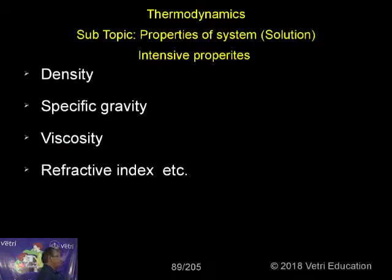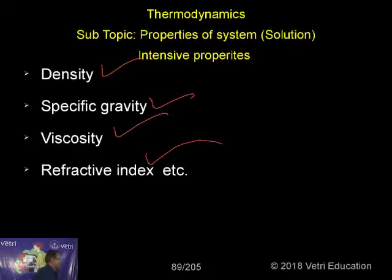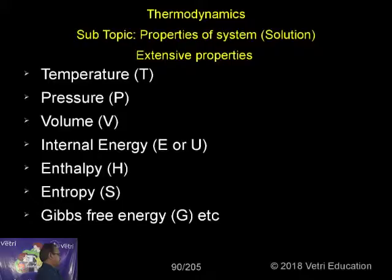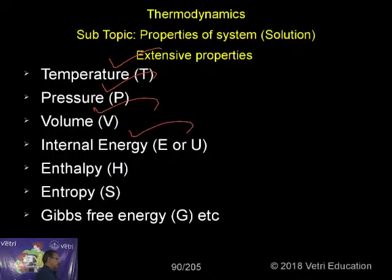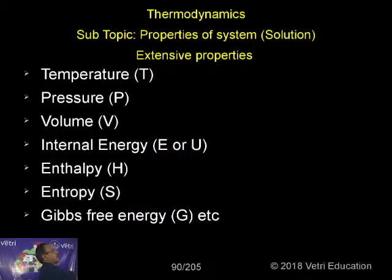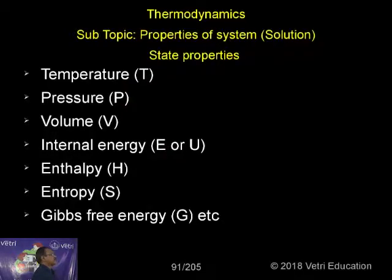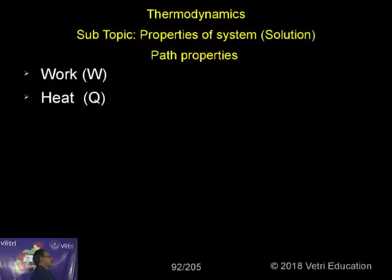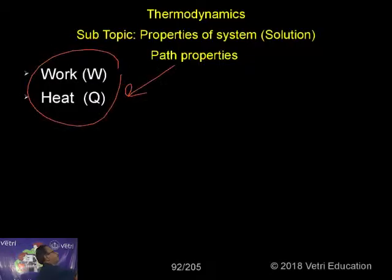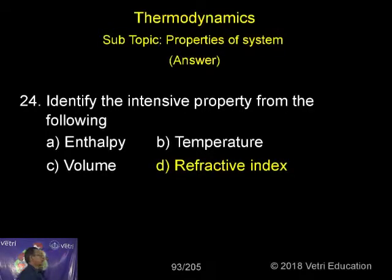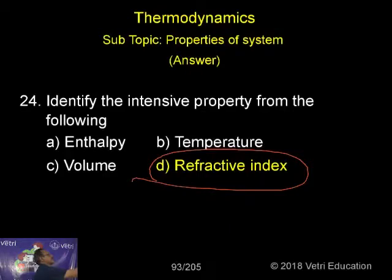Important examples of intensive properties are density, specific gravity, viscosity, and refractive index. For extensive properties, temperature, pressure, volume, internal energy, enthalpy, entropy, and free energy are all extensive properties — these can also be called state properties. Heat is a path property. So in this question, the correct answer is refractive index.